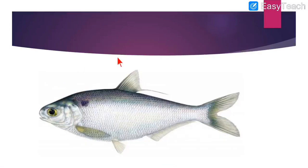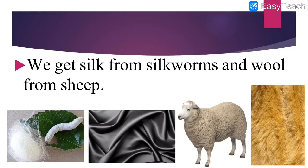We had seen one more important point — where do we get silk from? We get silk from silkworms, and we get wool from sheep. We can make clothes with silk — called silk clothes — that are very soft and silky. With wool, we can make woolen clothes like sweaters, scarves, jackets, etc., which will protect us in winter. So animals are used for getting silk and wool.